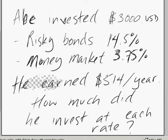And he invested in risky bonds at 14.5% and he invested the rest in money market at 3.75%. Now he got lucky and earned $514. And we want to know how much did he invest at each rate. Here's the rate and here's the rate.